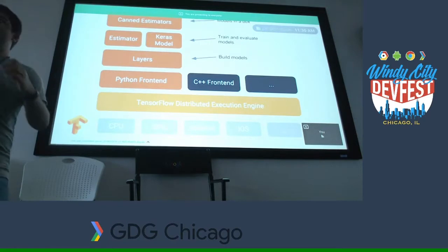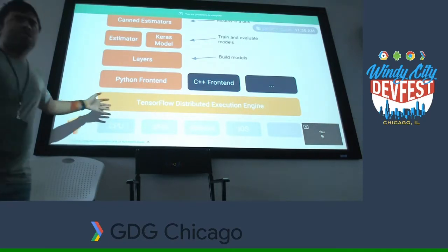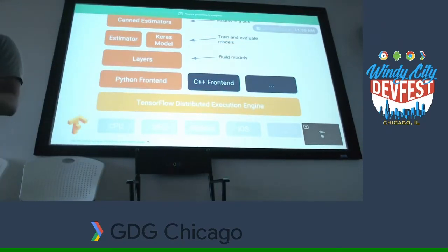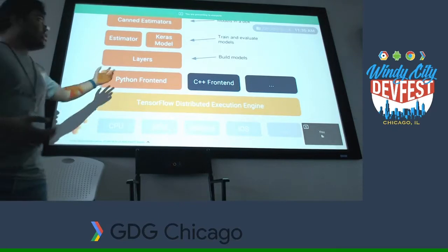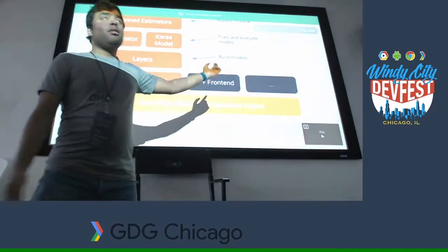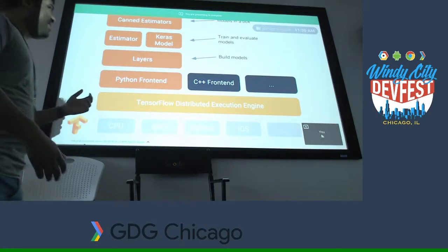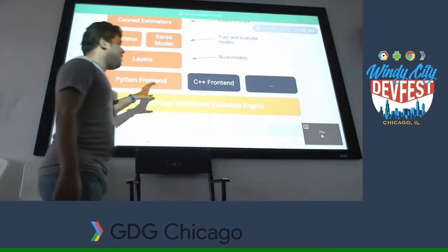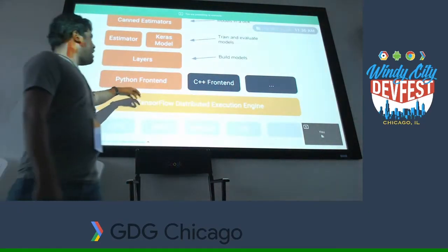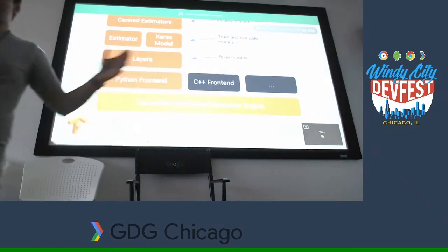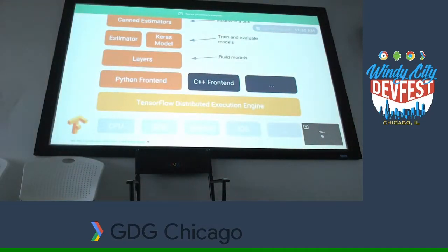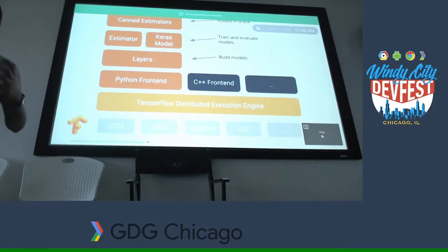Then you actually write your code — this is where execution happens. You can write in Python, C++, or even JavaScript. I'm a fan of Node.js so I say go Node.js everywhere. The way TensorFlow is written, you can write any front end to it — this front end is basically how you write your code. Right now Python is the officially supported language, but you can use any language.